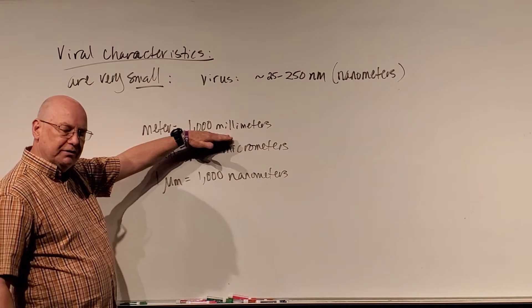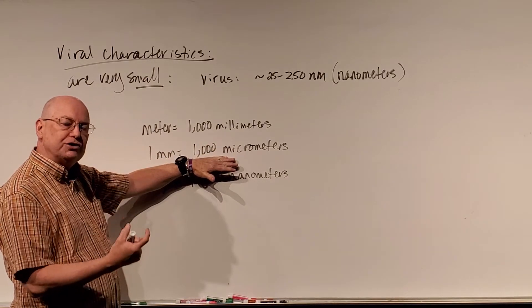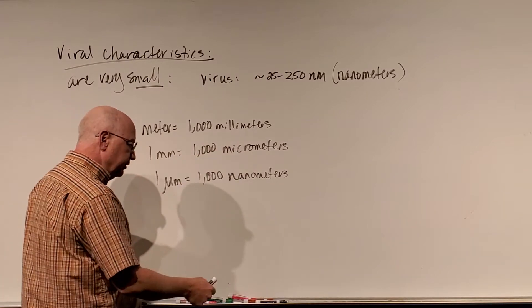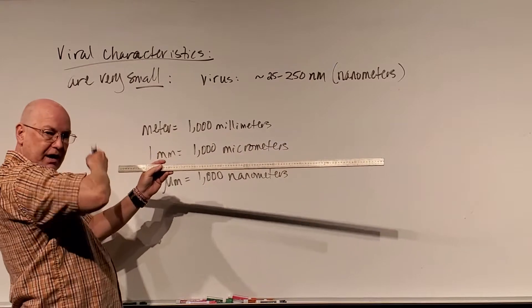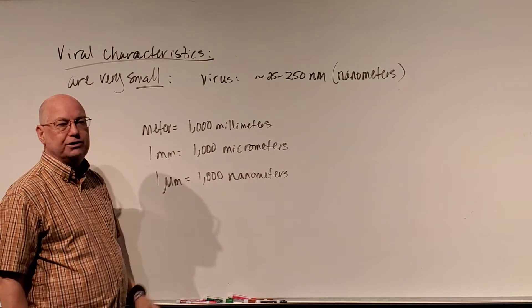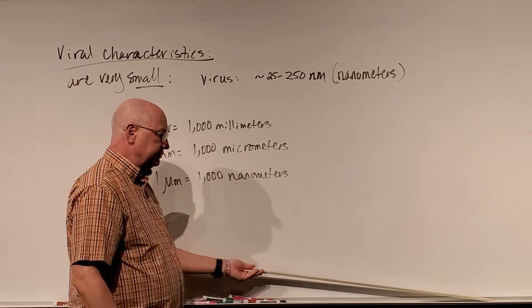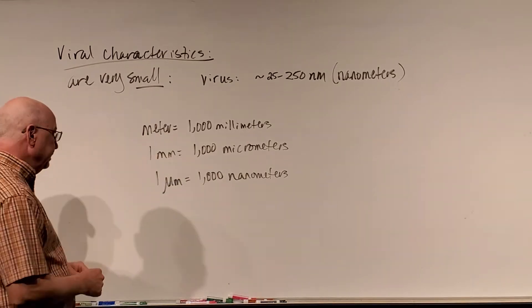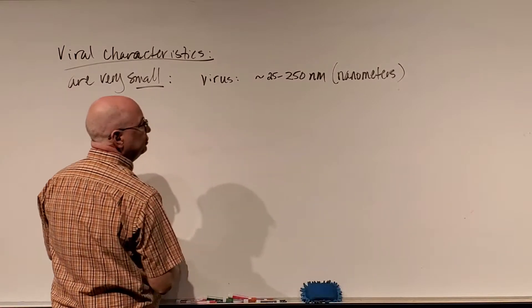A meter is a thousand millimeters, one millimeter is a thousand micrometers, and one micrometer is a thousand nanometers. We usually measure things in millimeters or centimeters. In microbiology especially in lab we've looked at things using micrometers — a thousandth of a millimeter or a millionth of a meter. If I took one millimeter and divided it into a billion units I would have a nanometer. So these are tiny — 25 to 250 nanometers in size.